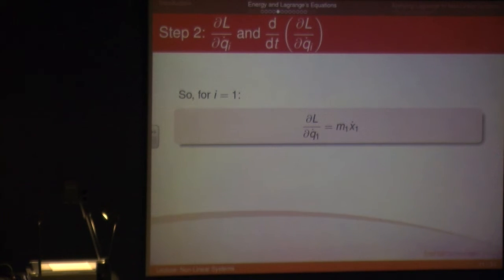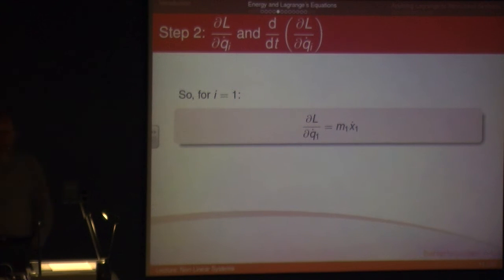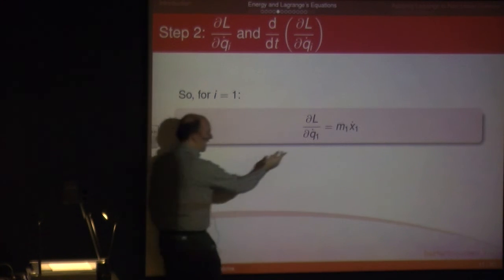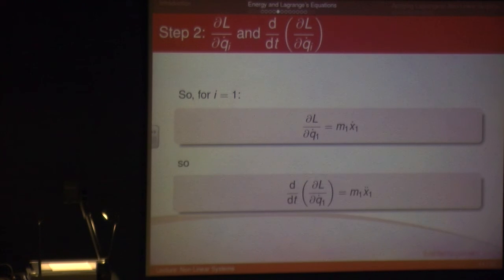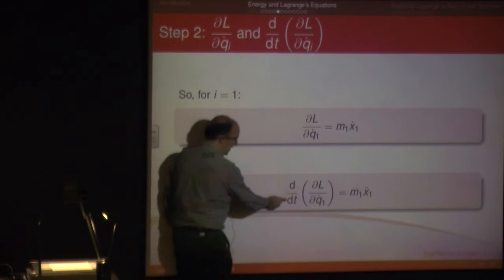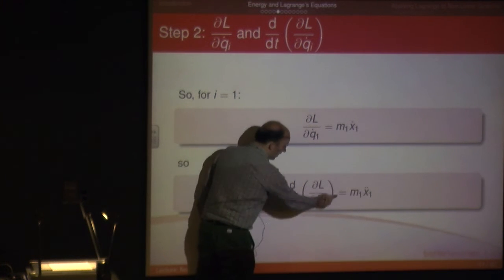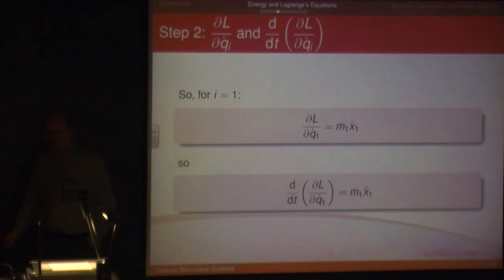When you take the time derivative, what varies with respect to time is X1-dot, and if you take the time derivative of X1-dot you get X1 double-dot. So D by DT of DL over DX1-dot gives M1 X1 double-dot.